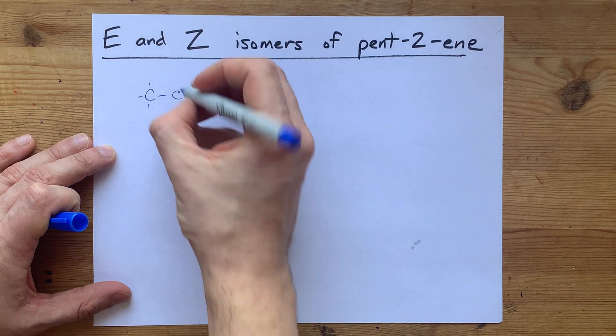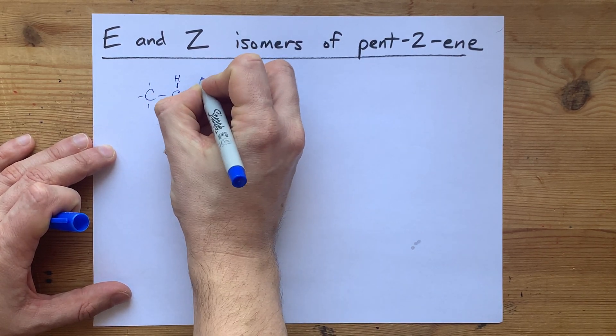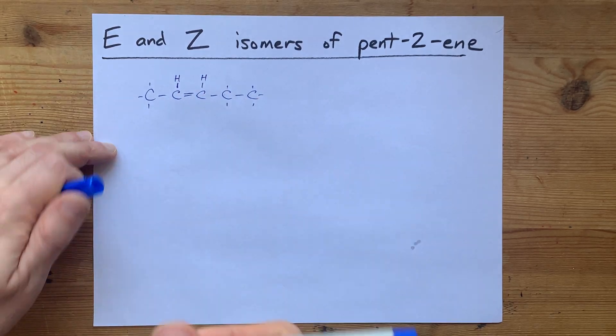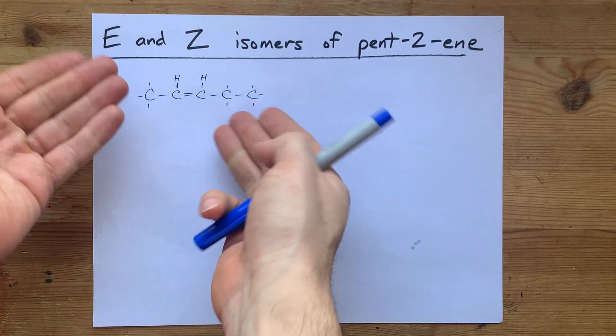the trans isomer and the cis isomer. In one of those, we have both hydrogens on the top of the molecule, on the same side. This would be the cis isomer.